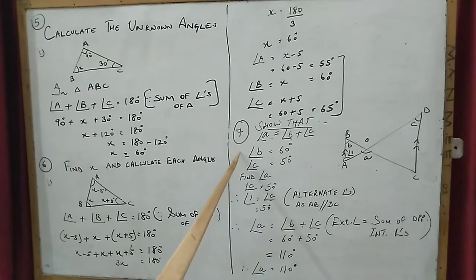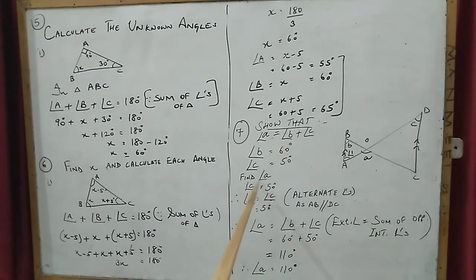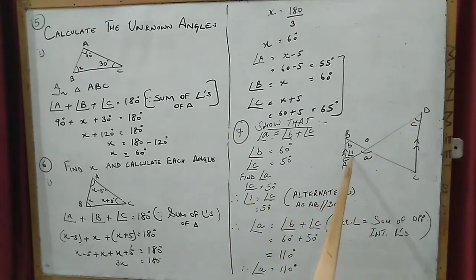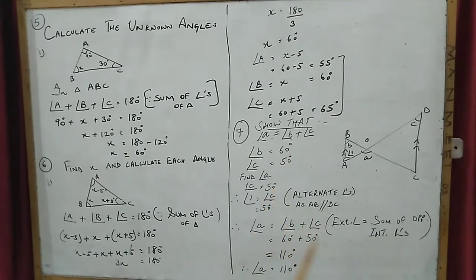Question 7: show that angle A equals angle B plus angle C. Angle B is 60 degrees and angle C is 50 degrees. This uses the exterior angle property. The parallel line signs indicate alternate angles. Angle A is the exterior angle, so it equals the sum of the two opposite interior angles: 60 plus 50 equals 110 degrees. Therefore angle A equals 110 degrees.